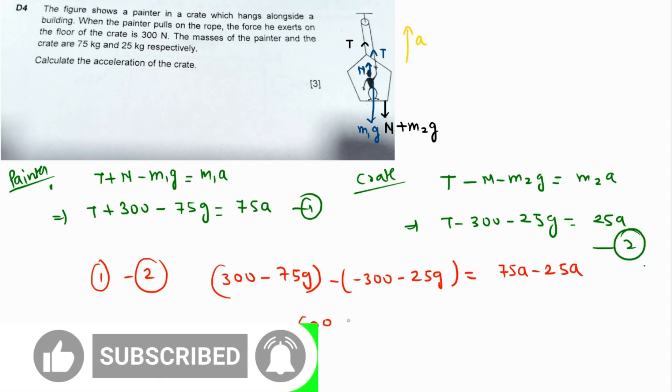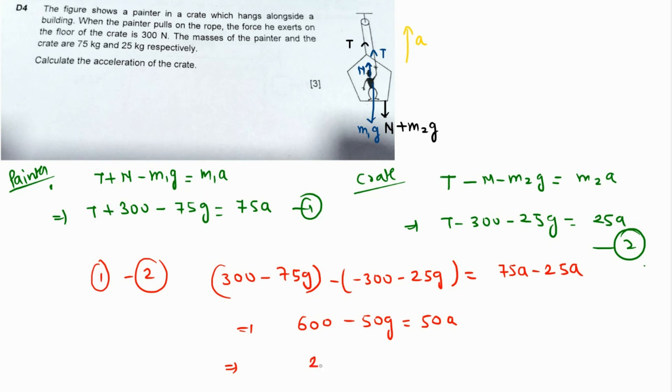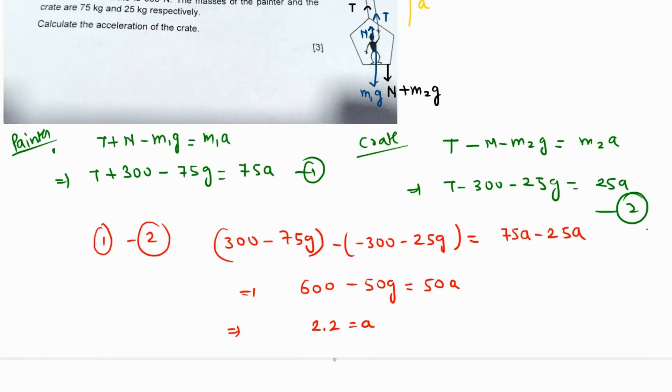So 600 minus 50G equals 50A. Dividing both sides by 50: 12 minus 9.8 equals 2.2. Therefore, the acceleration A is 2.2 meters per second squared, which is the acceleration of the complete system.